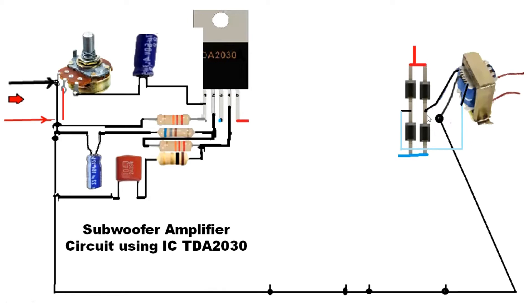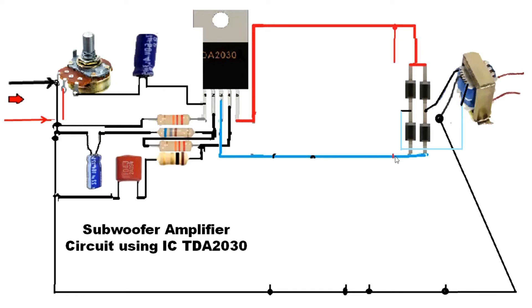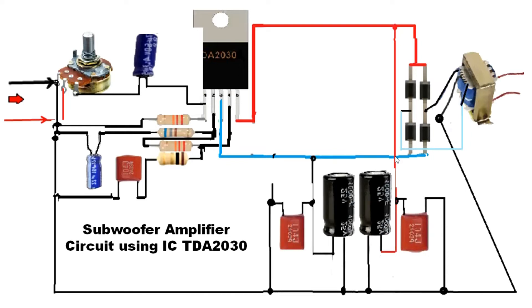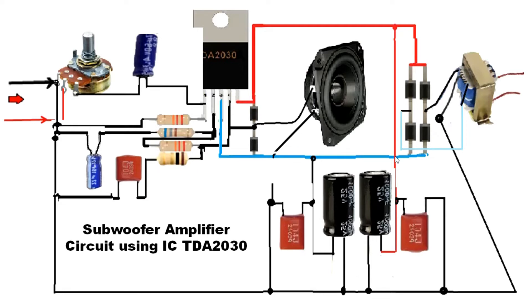This is the positive supply and this is the negative supply. The positive supply also has a condenser. The third supply is also a condenser — a 1000 µF, 15 volt condenser.